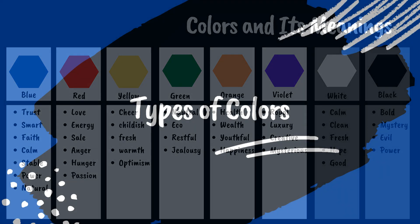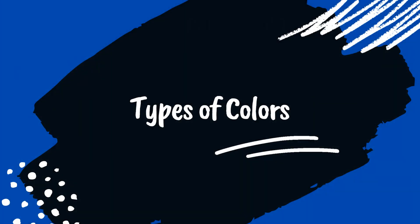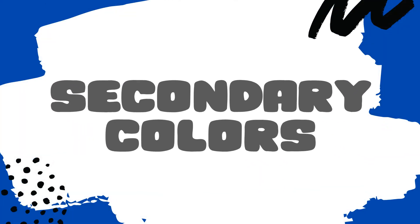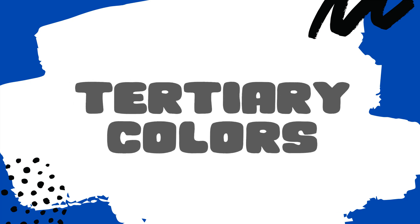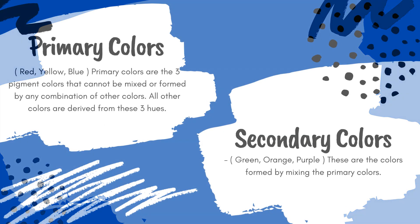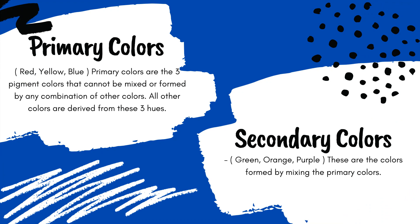In colors, there are three types: primary colors, secondary colors, and also tertiary colors. So first, what are primary colors? Primary colors consist of red, yellow, and also blue. The primary colors are the three pigment colors that cannot be mixed or formed by any combination of other colors. All other colors are derived from these three hues.